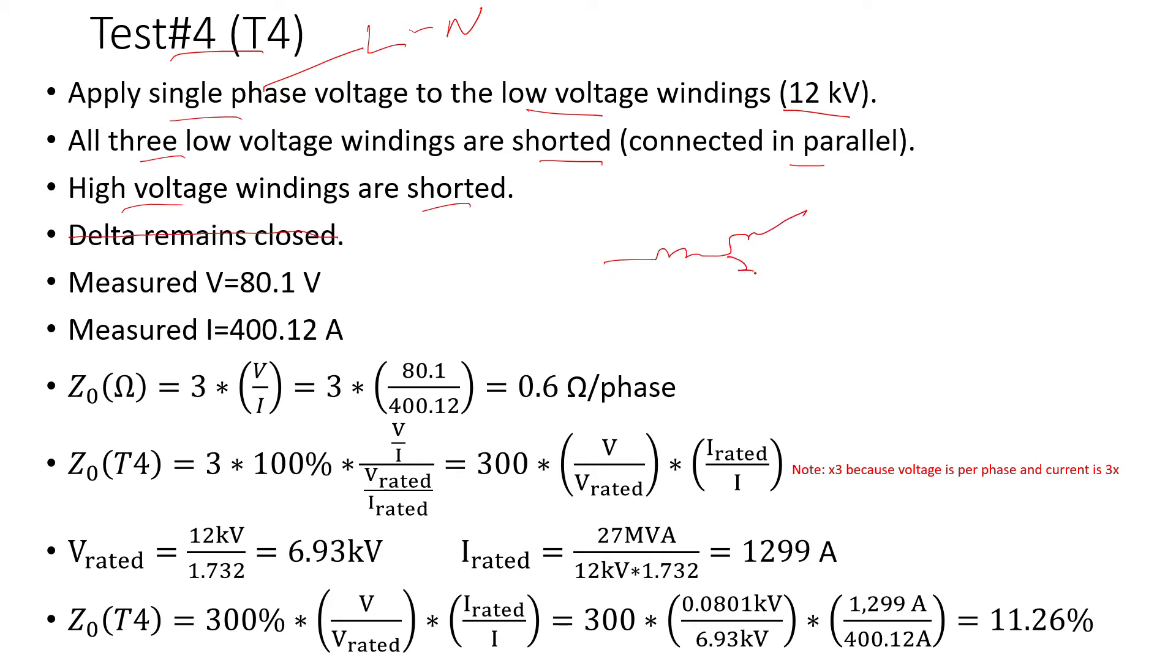So if you have a high voltage, so H1, H2, H3, and you have the low voltage windings, so X1, X2, X3 bushings.